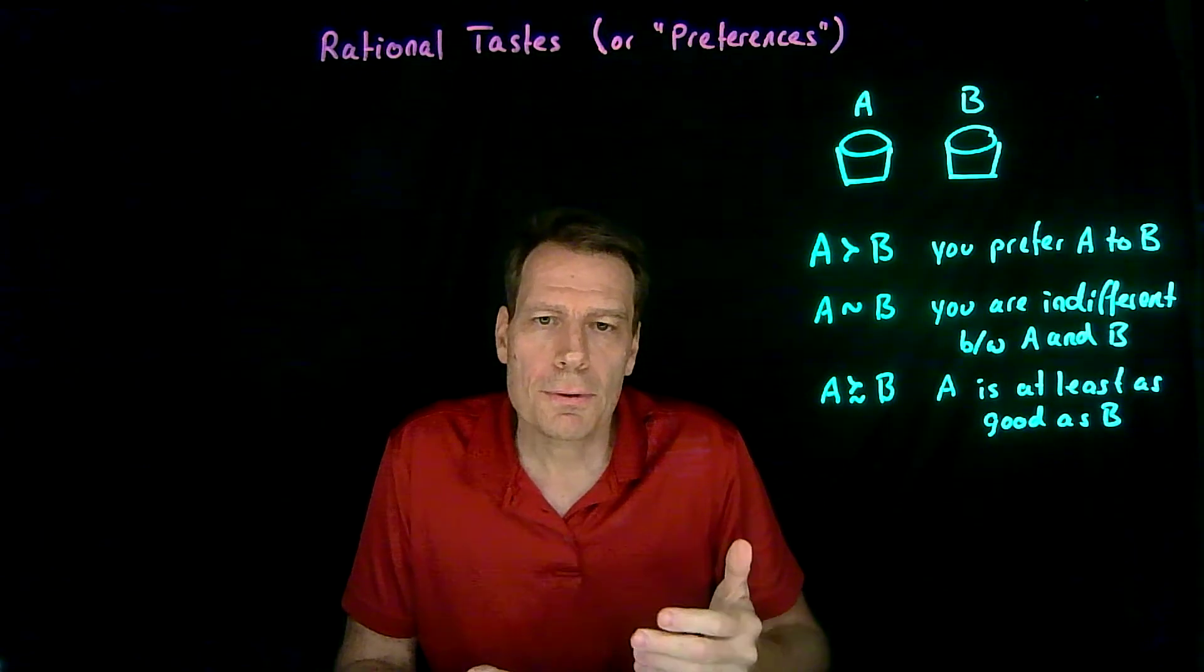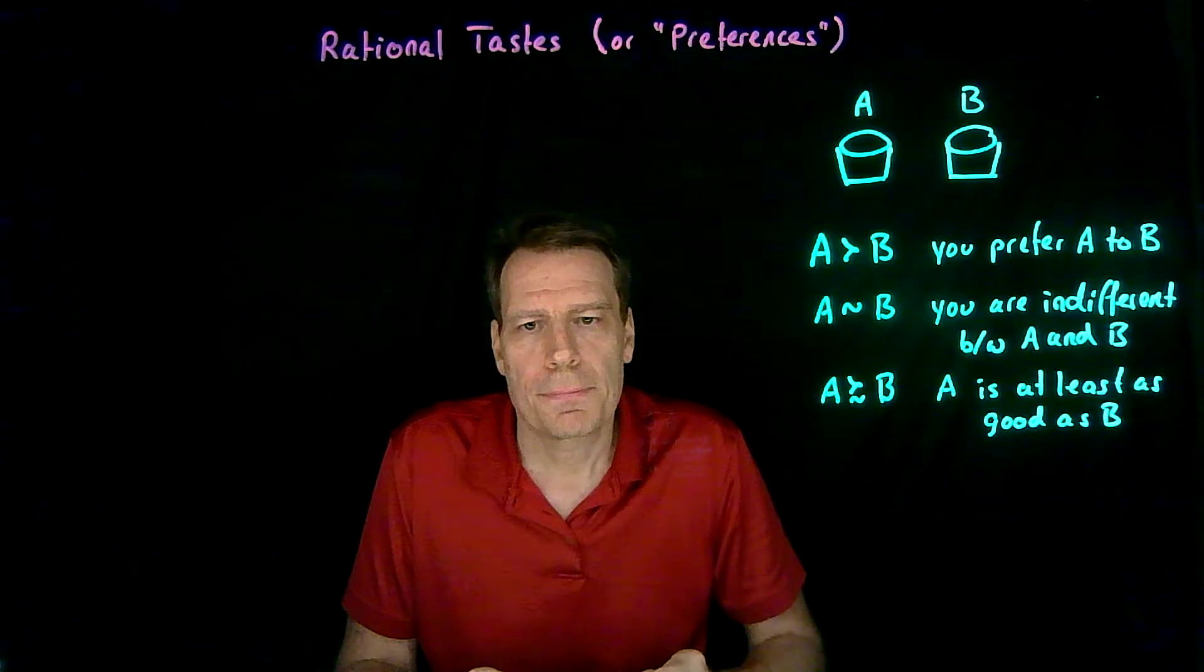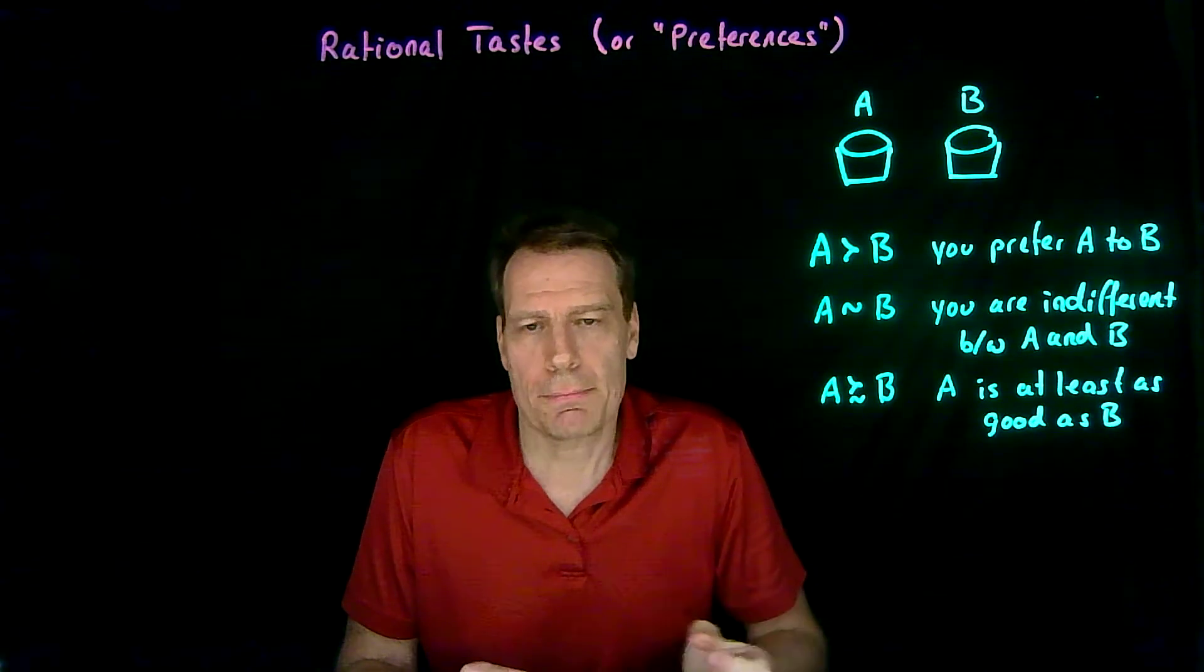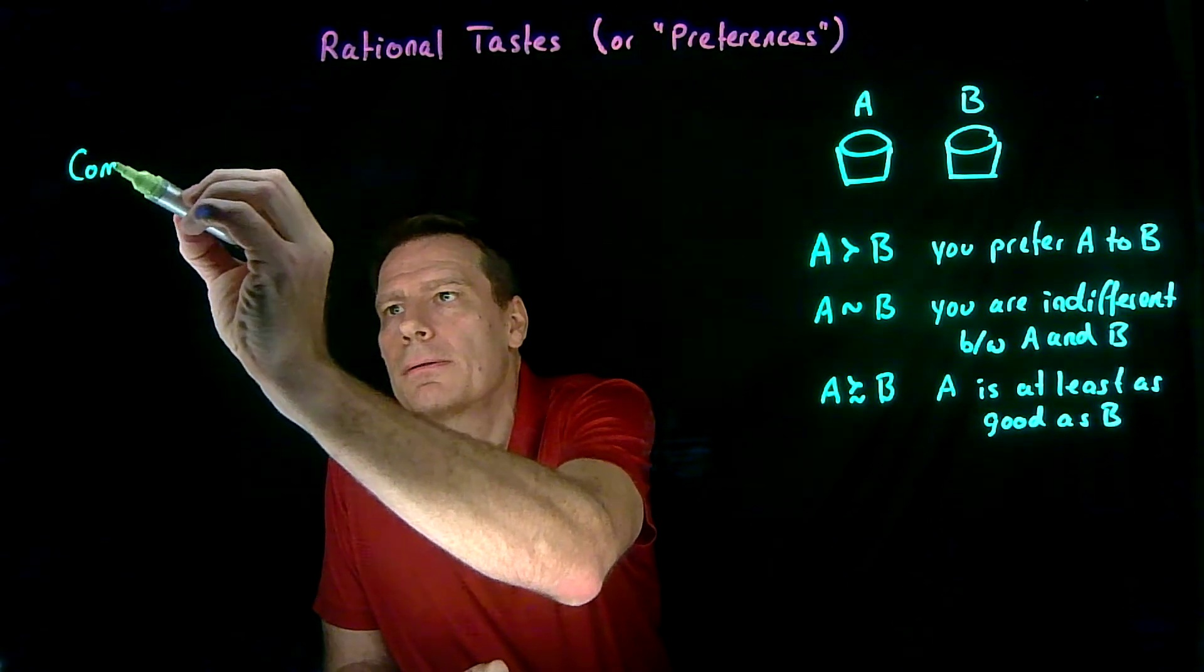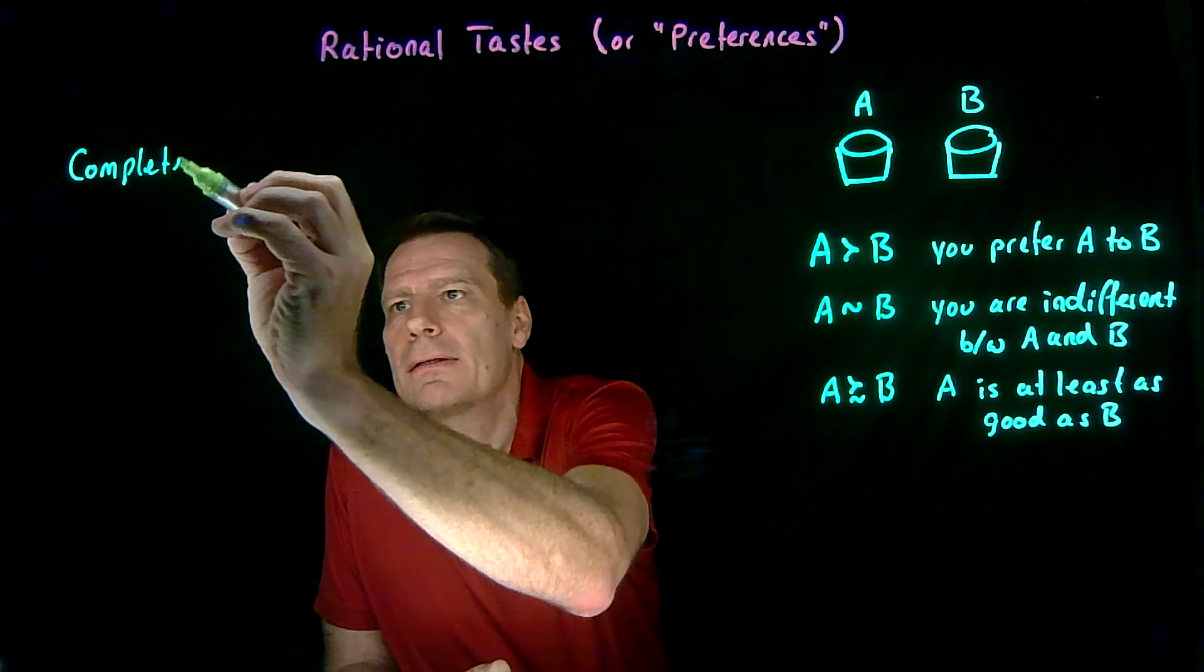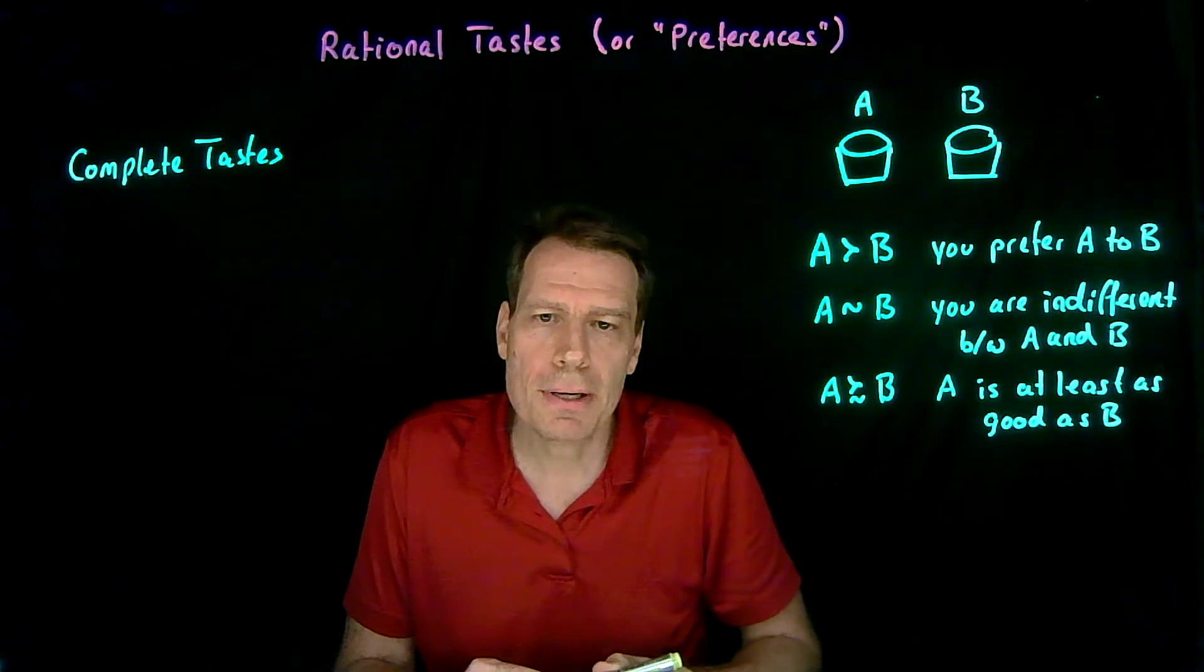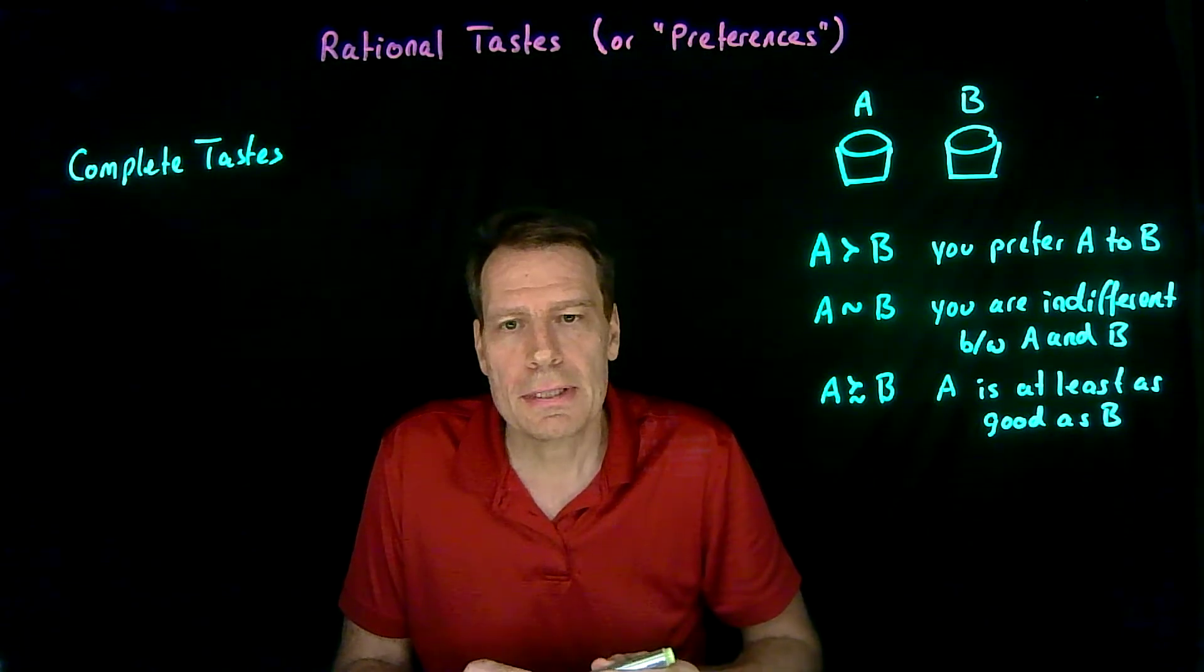Now in order to move this along, we have to make some assumptions about tastes. And the first assumption that we're going to make is the completeness assumption. So we're going to say that your tastes are complete. You have complete tastes if you can in fact make comparisons between baskets.